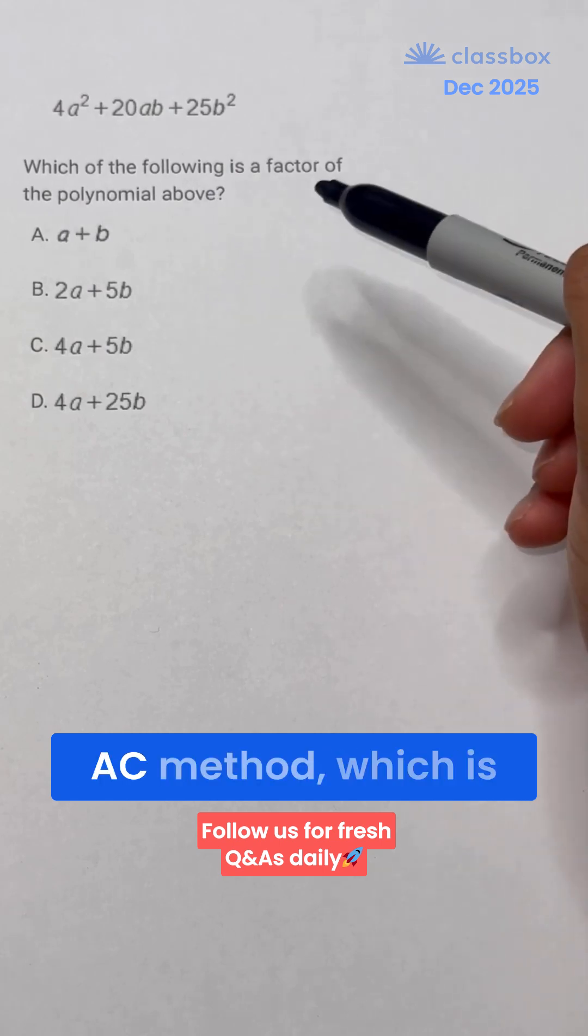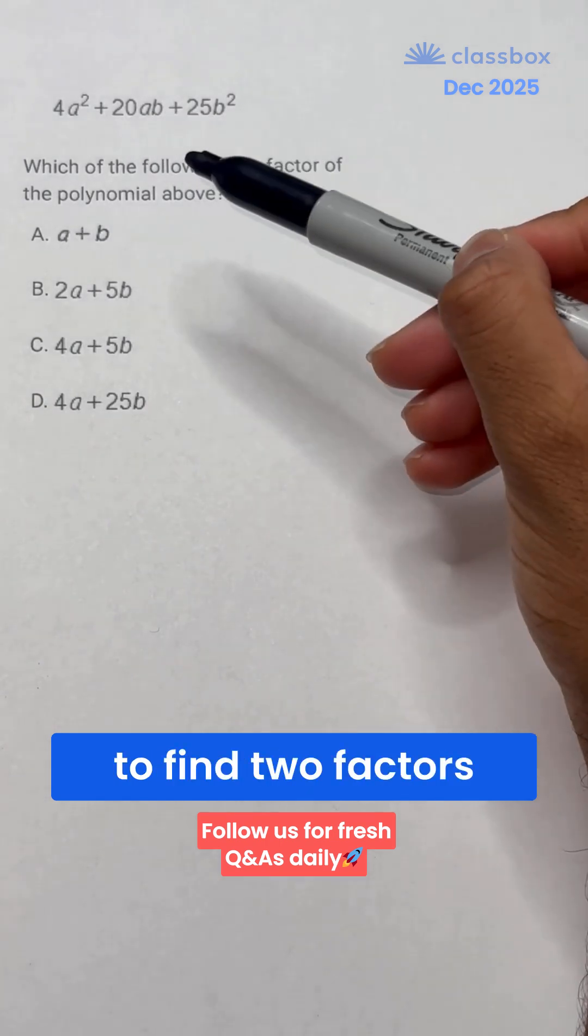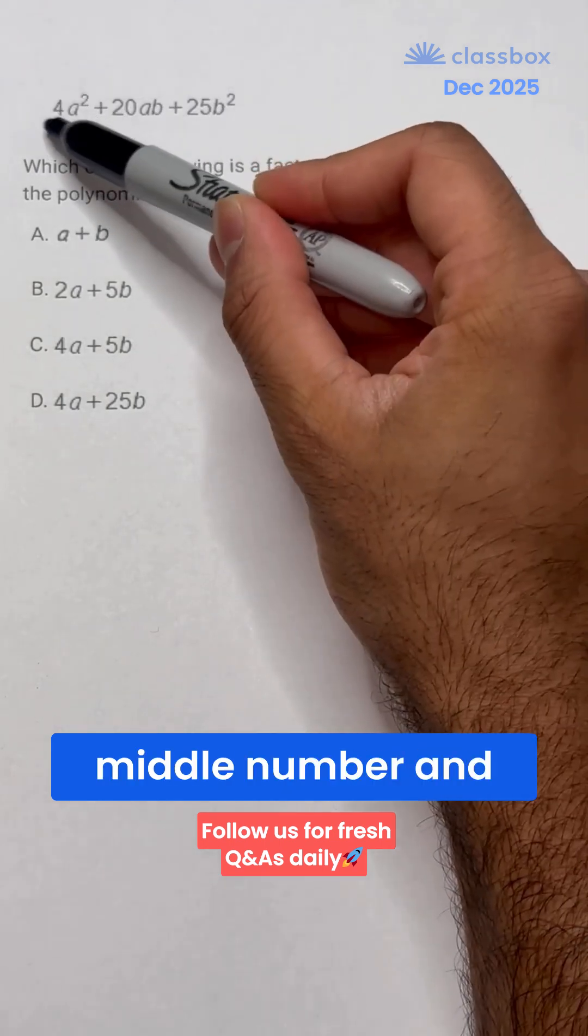Now we could use the AC method, which is a popular factoring method, or guess and check, where we try to find two factors that when we multiply and FOIL it out, we get the middle number and these two values.